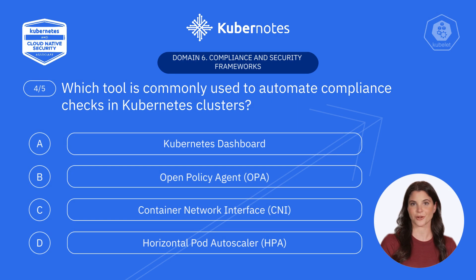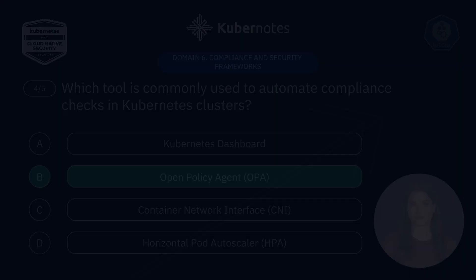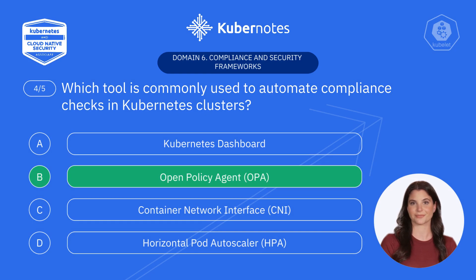Let's tackle question four. Which tool is commonly used to automate compliance checks in Kubernetes clusters? A, Kubernetes dashboard. B, Open Policy Agent OPA. C, Container Network Interface CNI. D, Horizontal Pod Autoscaler HPA. Absolutely, it's B, Open Policy Agent OPA. OPA allows you to define and enforce compliance policies as code, automating governance across your Kubernetes cluster.